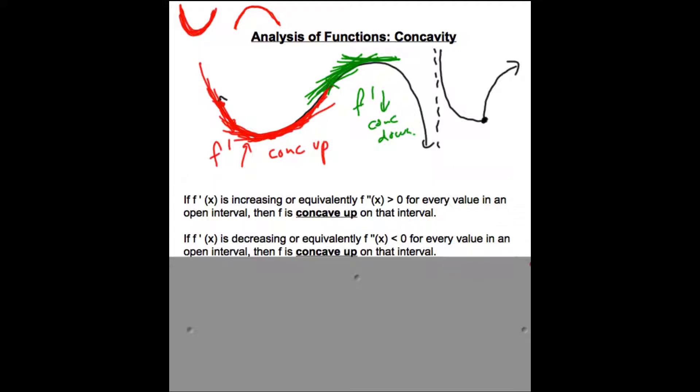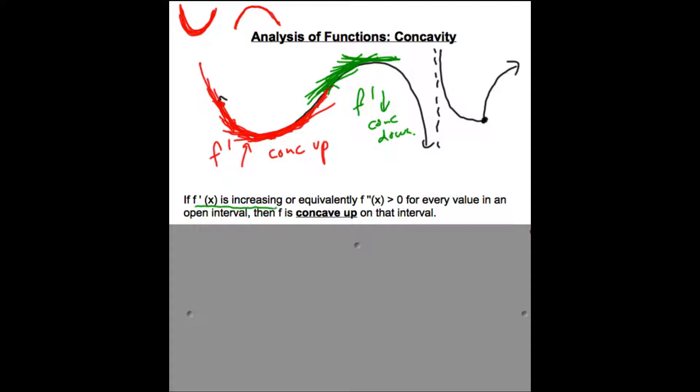So let's just put this together. If the first derivative is increasing, now, we just finished talking about what it means when something's increasing and decreasing, and when something's increasing, its derivative is positive. So when I say that the first derivative is increasing, that's equivalent to saying that the second derivative is positive. So when these things happen, the graph is concave up on the interval.